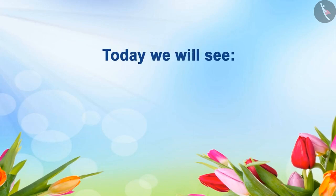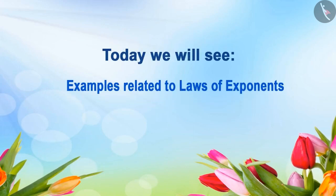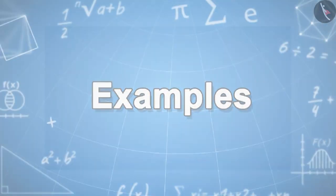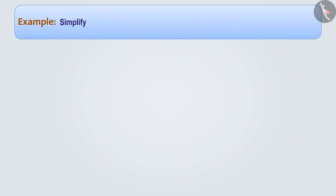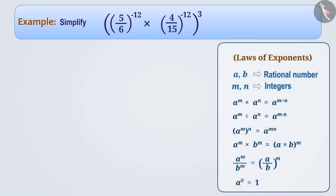Today we will see examples related to laws of exponents. Example: Simplify (5/6) to the power minus 12, multiplied by (4/15) to the power minus 12, whole to the power 3. To simplify this, we need an understanding of the laws of exponents. Pause the video and revise them again.